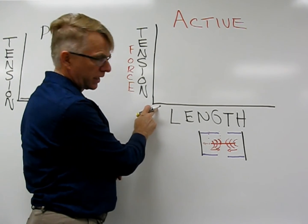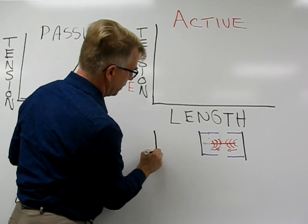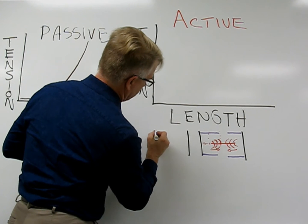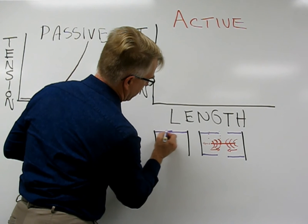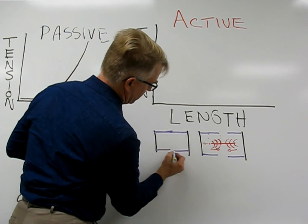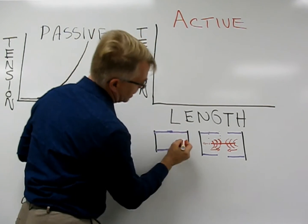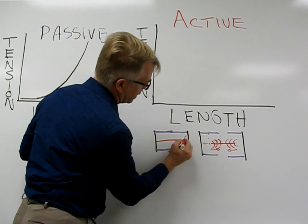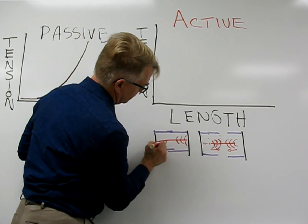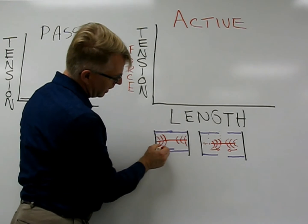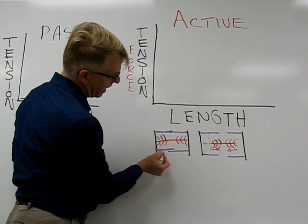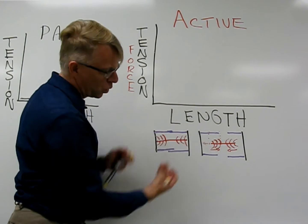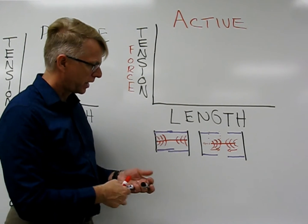When the sarcomere is really, really short — on the left side of the length axis — things are different. The actin filaments may even overlap a little bit, and the myosin is basically butting right up against the Z-bands with its myosin heads. At this point, if the myosin head tries to grab onto the actin filament and pull it tighter, it can't because it's already butted up against the Z-band and has nowhere further to go. It simply cannot contract any further, no matter how hard it tries.